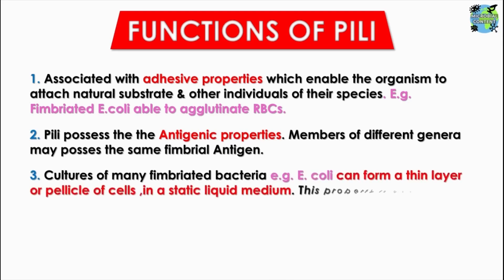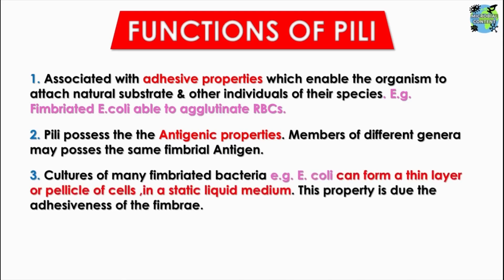The next important function is that cultures of fimbriated bacteria, for example E. coli, can form a thin layer or pellicle of cells in a static liquid medium. When grown in a static liquid broth, they multiply and form growth at the surface called a pellicle. This property is due to the adhesiveness of the fimbriae, and they also act as an organ to supply oxygen in large quantities.